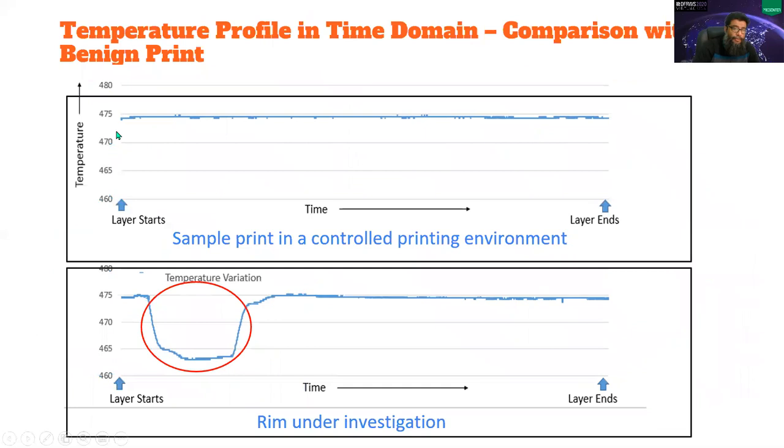In the time domain, you can see the benign object is like pretty much a straight line. But here, in the first quarter, there was a dip like the temperature was around 460 or like 10 Celsius down.